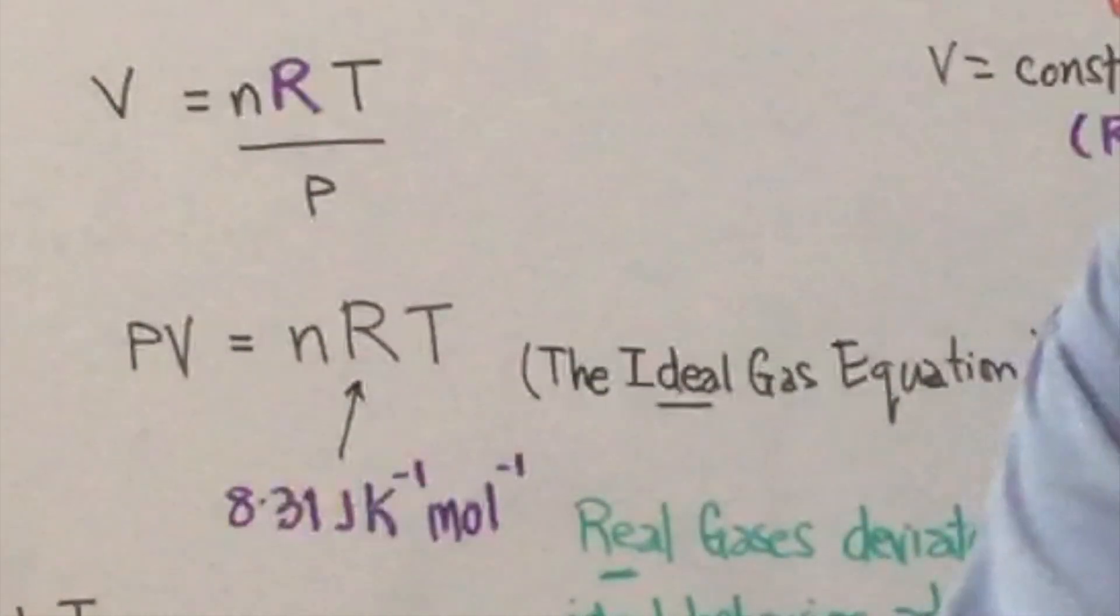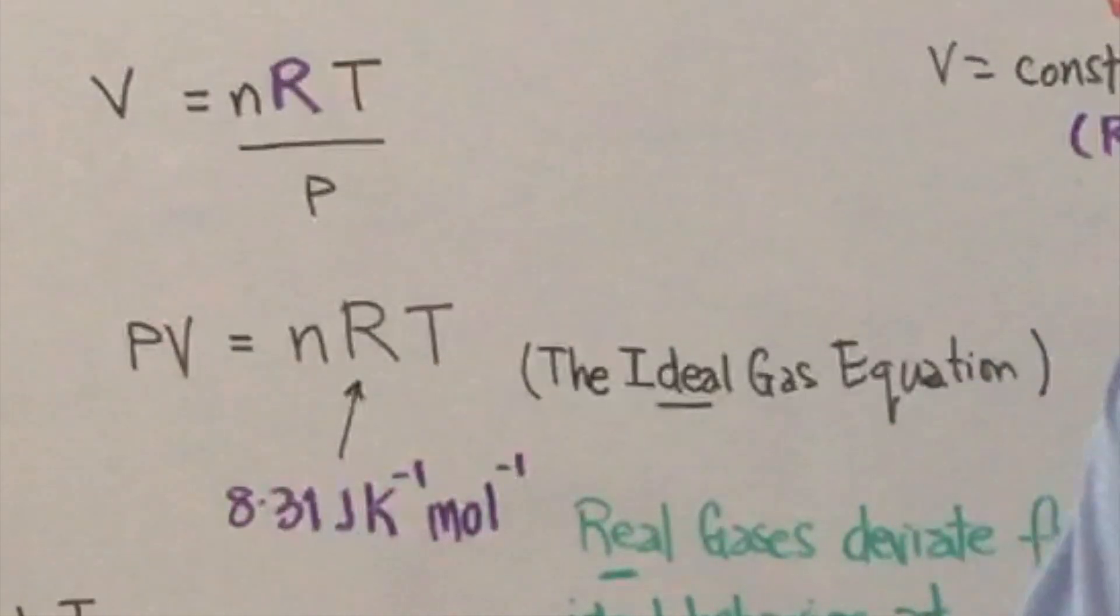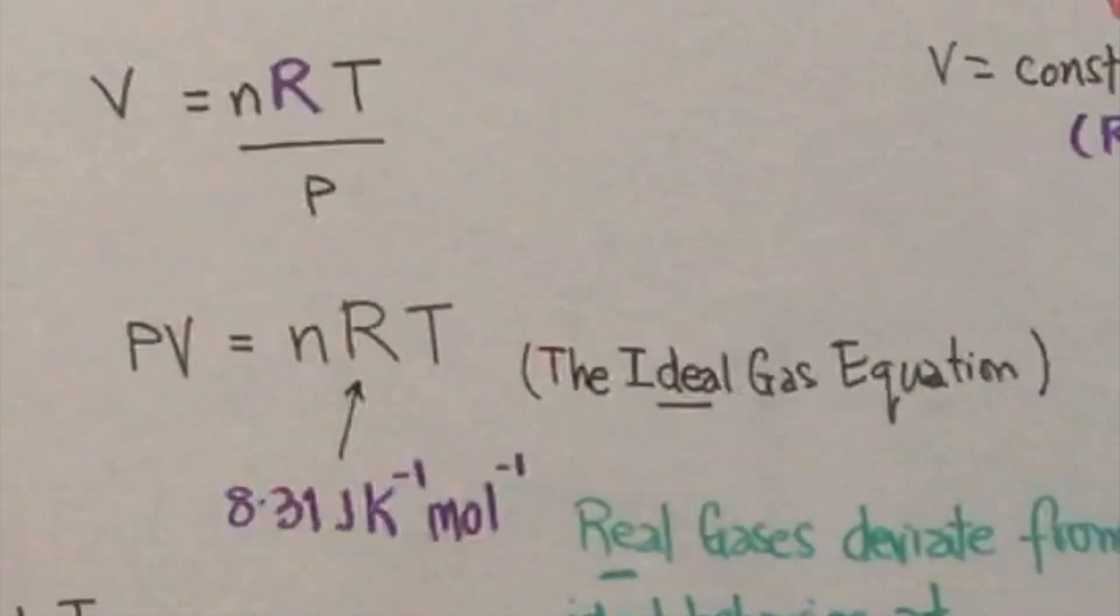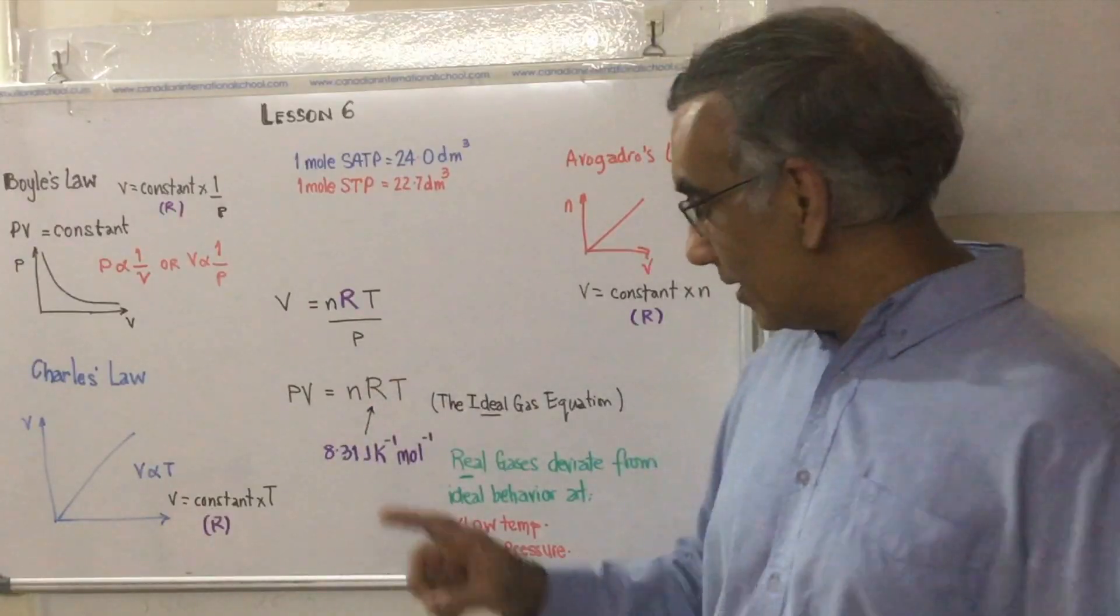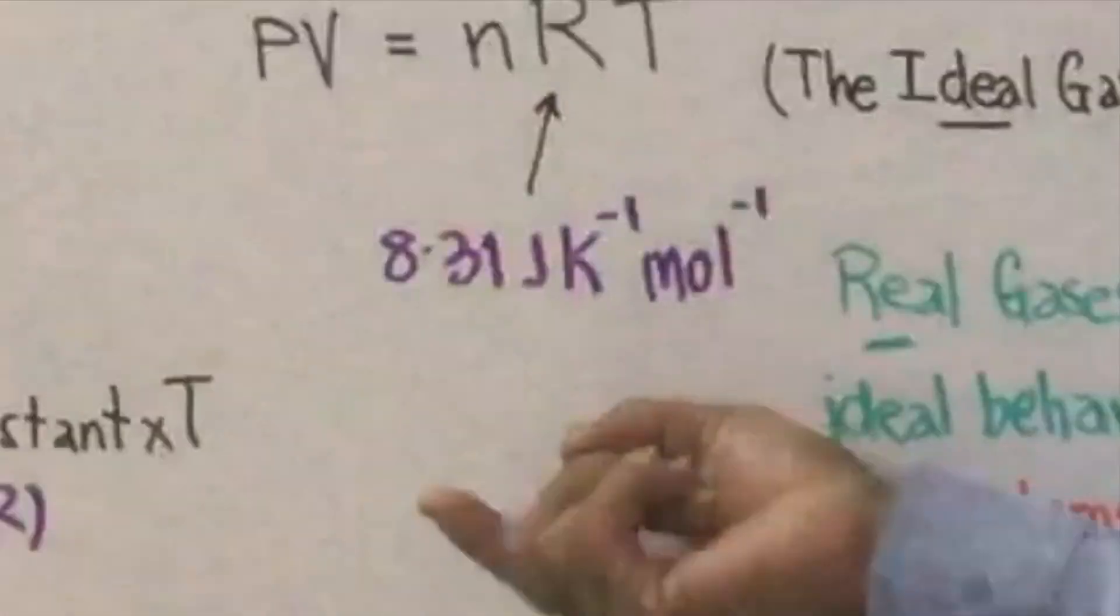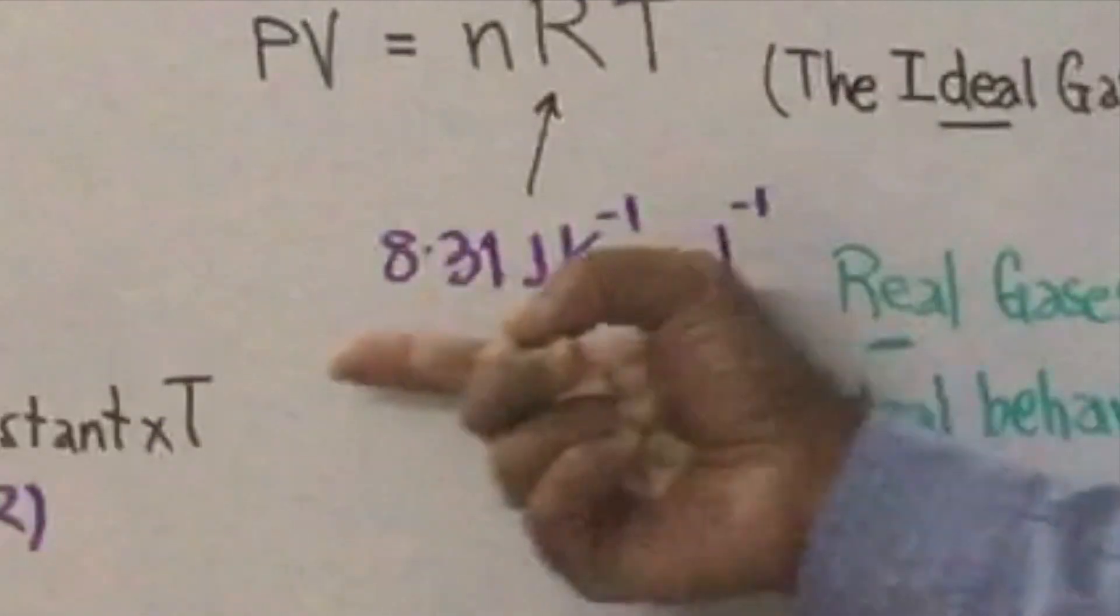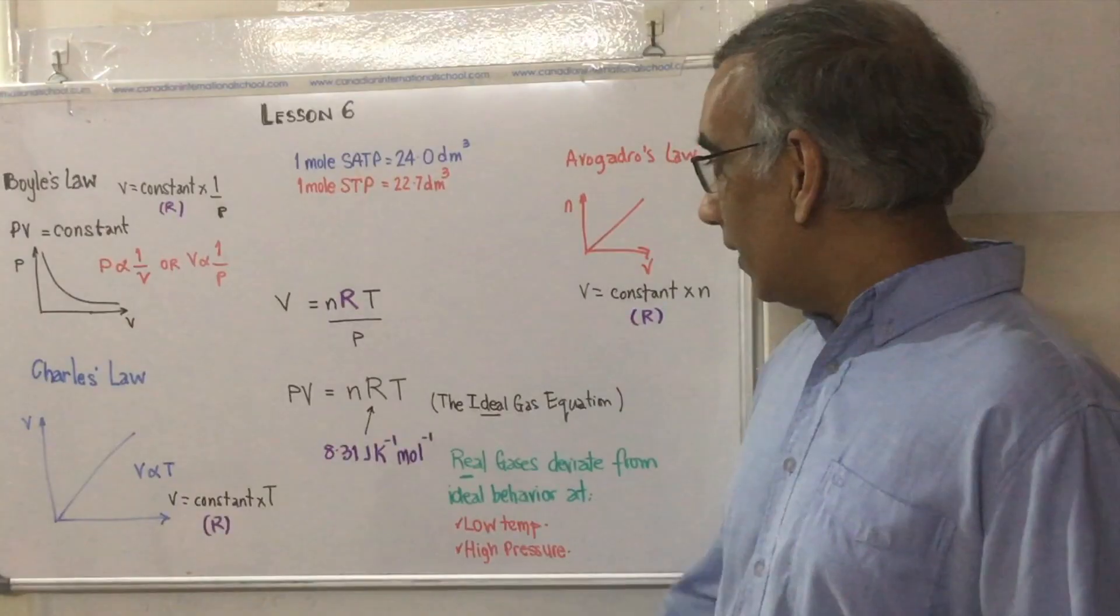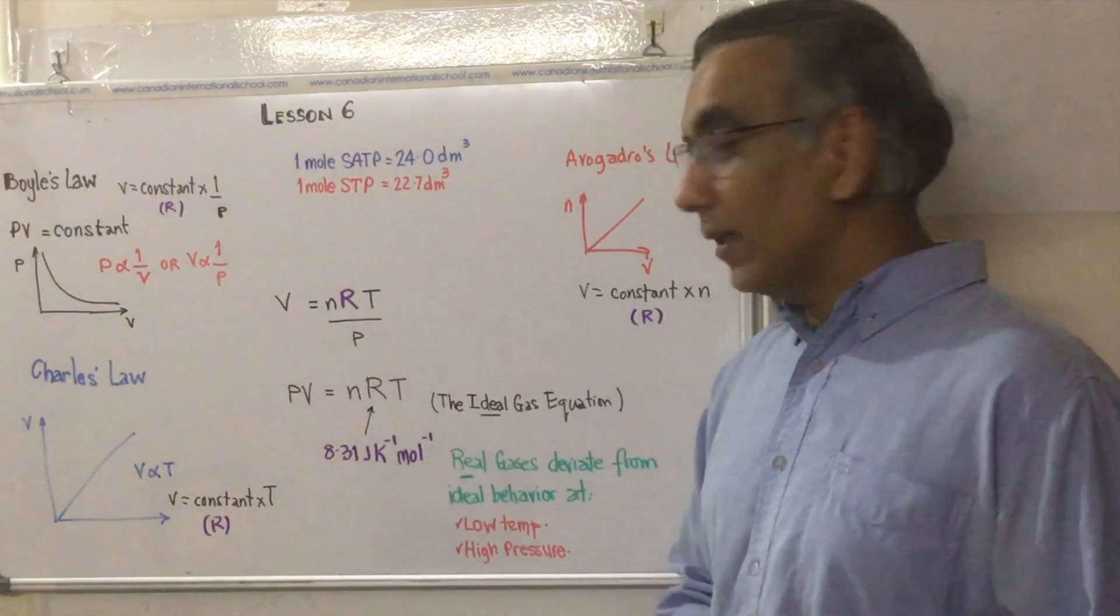Pressure in kilopascals multiplied by volume in dm³ equals the number of moles multiplied by this constant here, the gas constant 8.314 joules per Kelvin mole. That's joules on the top and Kelvin multiplied by moles at the bottom. And that is multiplied by temperature in Kelvin.